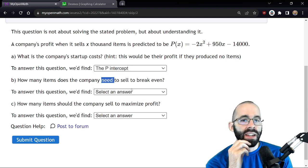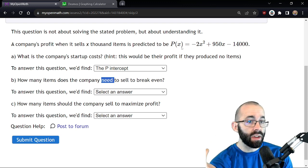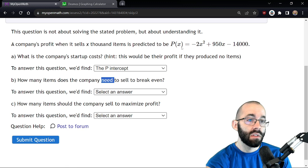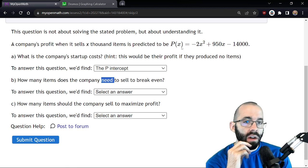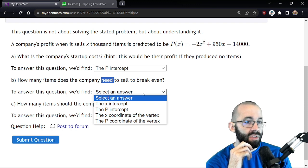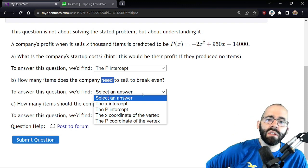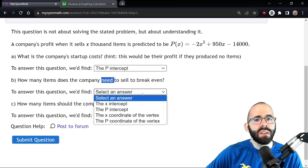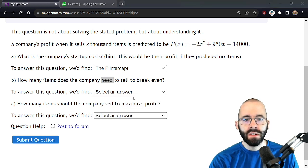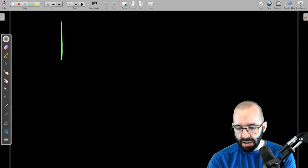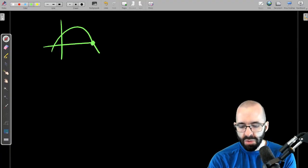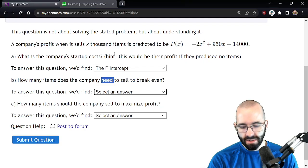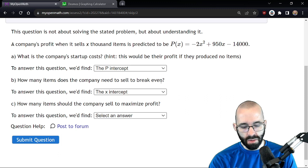How many items does the company need to sell to break even? We could find break even point, that's when the profit is zero. We don't need to find it, what is the profit zero? Profit is zero, that's when the output is zero, that's the horizontal intercept. Output zero. Let's draw a picture. If we have a quadratic, what is the output equal to zero? The output zero at the horizontal intercept.